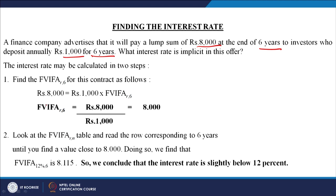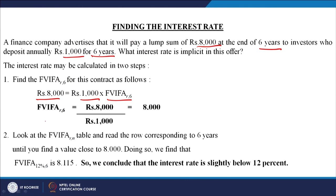How much they are returning: 8000 rupees. How much we are paying: 1000 rupees every year annuity. To find the future value interest factor, since R is unknown and N is 6, the future value interest factor equals 8000 divided by 1000, which comes out as 8.